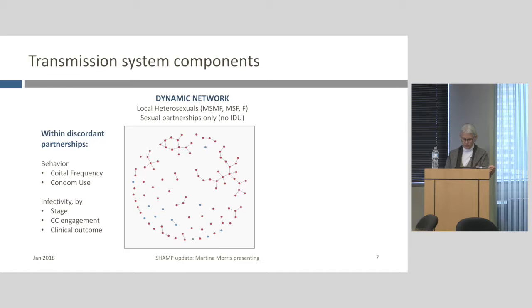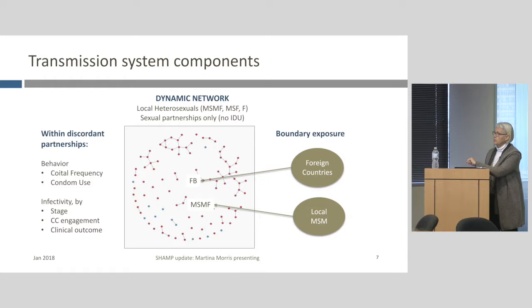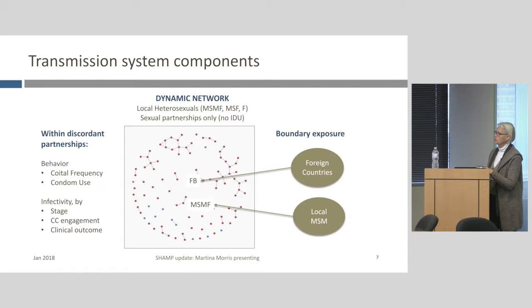All models have some kind of a boundary, and the question is how you manage exposure across it. We identify foreign-born individuals in our population and understand their exposure from foreign countries via travel back to those countries. Any HIV prevalence differential due to arriving HIV-positive is already incorporated in the model's prevalence differentials. What we're trying to capture dynamically is: as these people travel back and forth to their home country, what does their exposure look like? We rely on Roxanne's data for some of that. The other boundary is men who have sex with both males and females — the boundary to the local MSM epidemic.